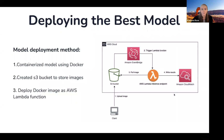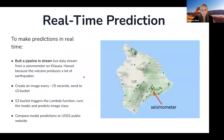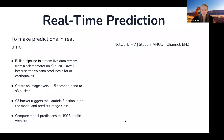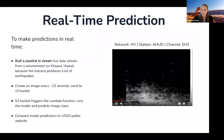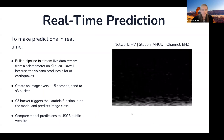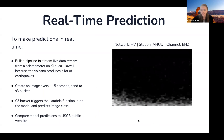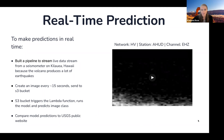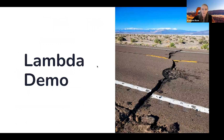To deploy this model, I containerized it using Docker, created an S3 bucket to store images, and deployed a Docker image as an AWS Lambda function to make predictions in real time. I built a pipeline to stream live data from a seismometer on Kilauea, Hawaii, because the volcano produces a lot of earthquakes. I created an image every 15 seconds and sent it to the S3 bucket. Here's an earthquake going by on this slideshow of spectrogram images — the S3 bucket triggers the Lambda function, runs the model, and predicts the image class automatically. I compared the model predictions to the USGS public website.